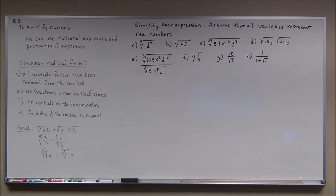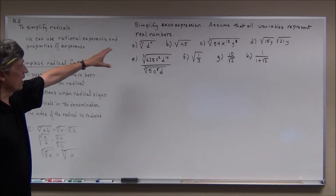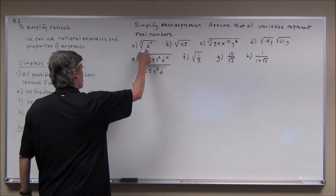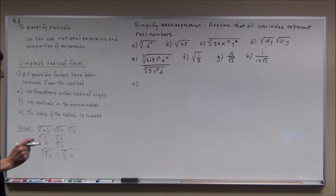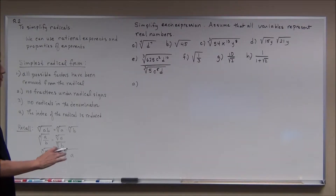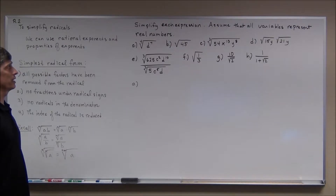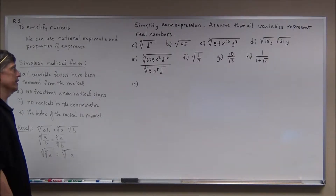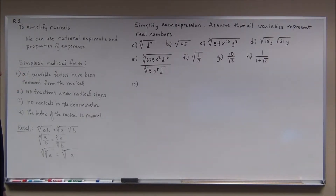I'd like to use these properties to help decide how to simplify these expressions. We'll start with A. Now it says the variables represent real numbers, but it doesn't say whether they are positive or negative. A lot of times in these problems the directions will say assume variables represent positive numbers, but that's not the case here, and we have to be careful because you cannot take an even root of a negative number.